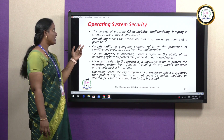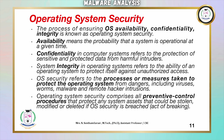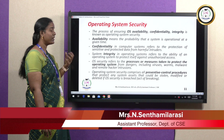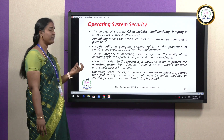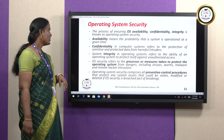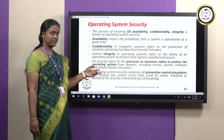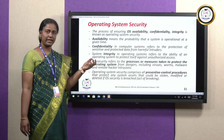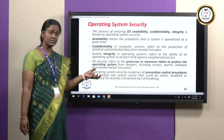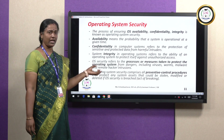Availability means the probability of the system being operational at a given time. Confidentiality refers to the protection of sensitive and protected data from harmful intruders. Integrity in the operating system refers to the ability of the OS to protect itself against unauthorized access. OS Security refers to the process or measures taken to protect the operating system from dangers including viruses, worms, malware, and remote hacker intrusions.